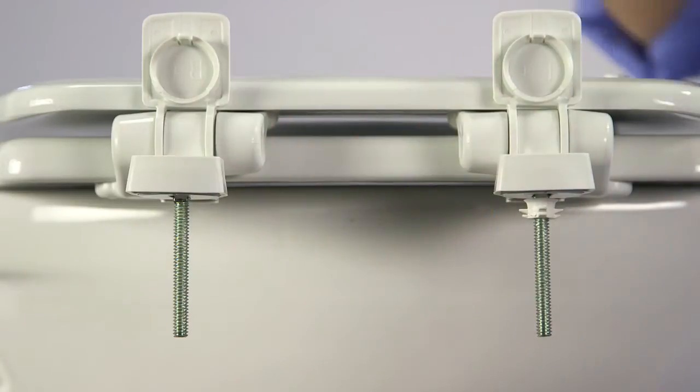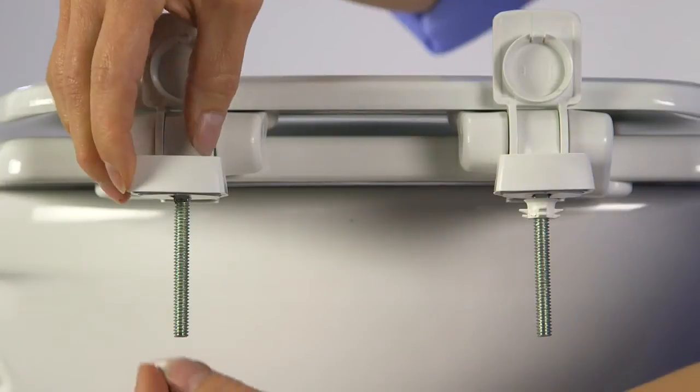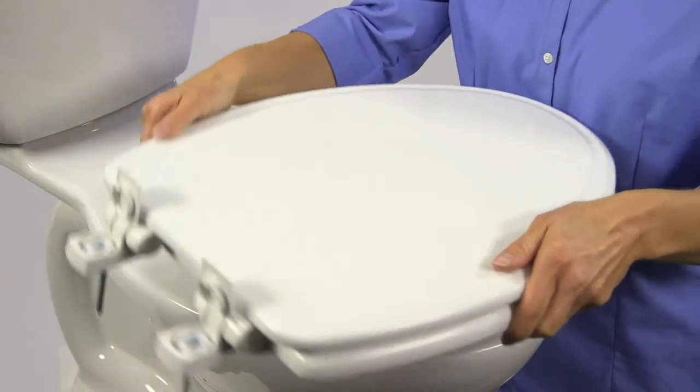Press a bushing onto each bolt. When this is complete, place the seat on the toilet.